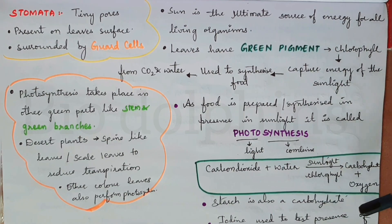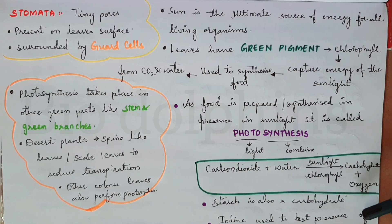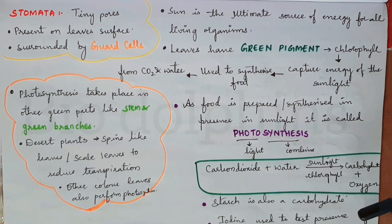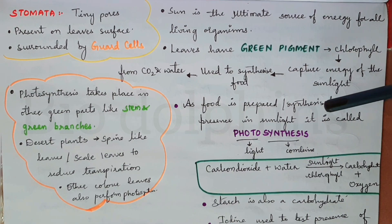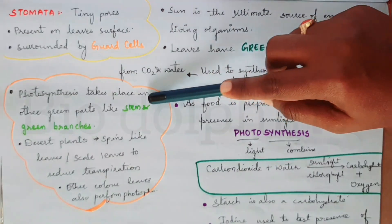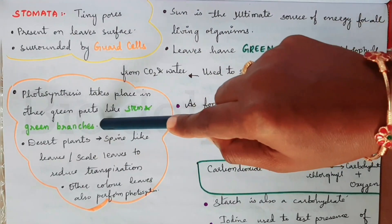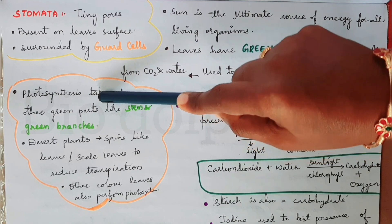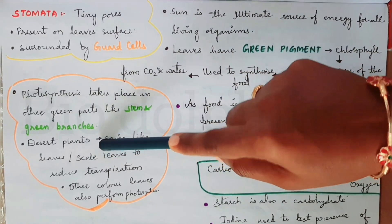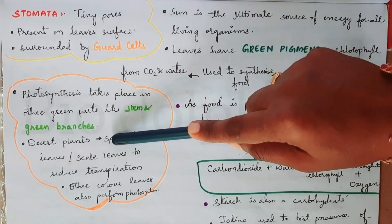When iodine drops show a blue or black color, we can confirm the presence of carbohydrates. Photosynthesis also takes place in other green parts of the plant, like the stem and green branches.